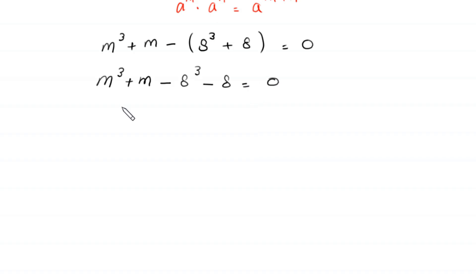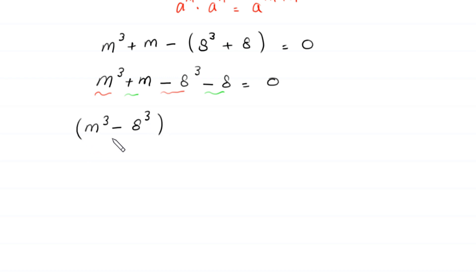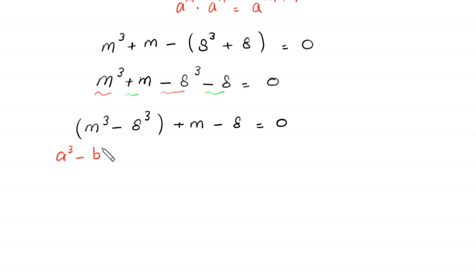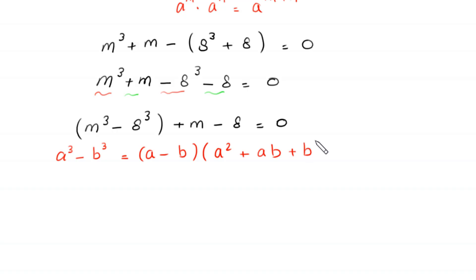We group the terms m³ and -8³ together, and m and -8 together. This gives (m³ - 8³) + (m - 8) = 0. We now have a difference of two cubes, so we apply the identity a³ - b³ = (a - b)(a² + ab + b²).